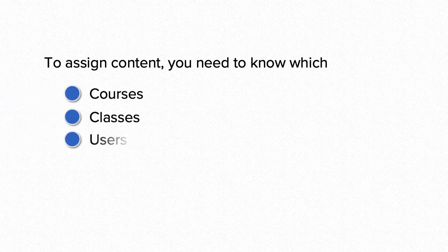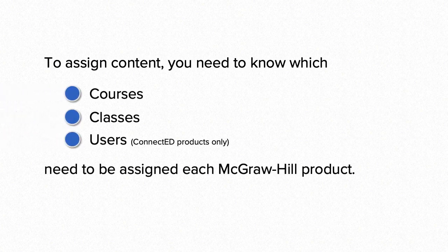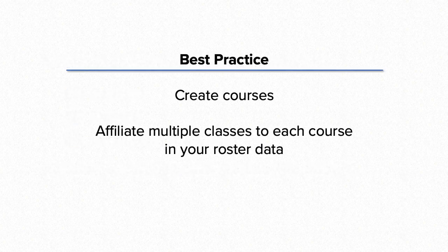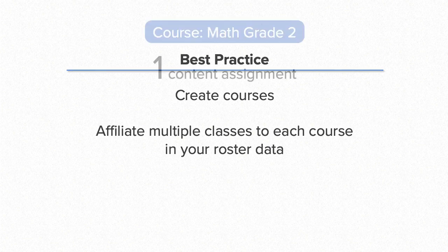To assign content, you'll need to know which courses, classes, or users need to be assigned each McGraw-Hill product. You can save yourself valuable time by creating courses and then affiliating multiple classes with each course. That enables you to assign a product to one or more courses, and all affiliated classes, teachers, and students receive that content assignment.